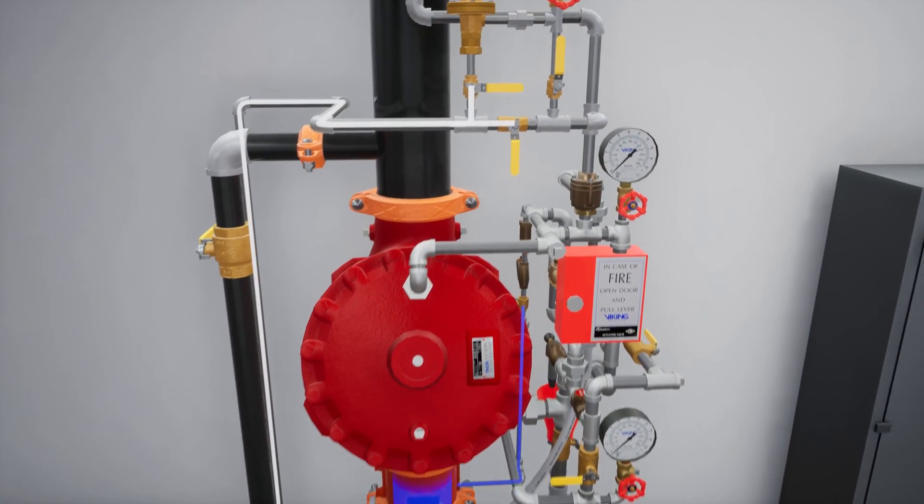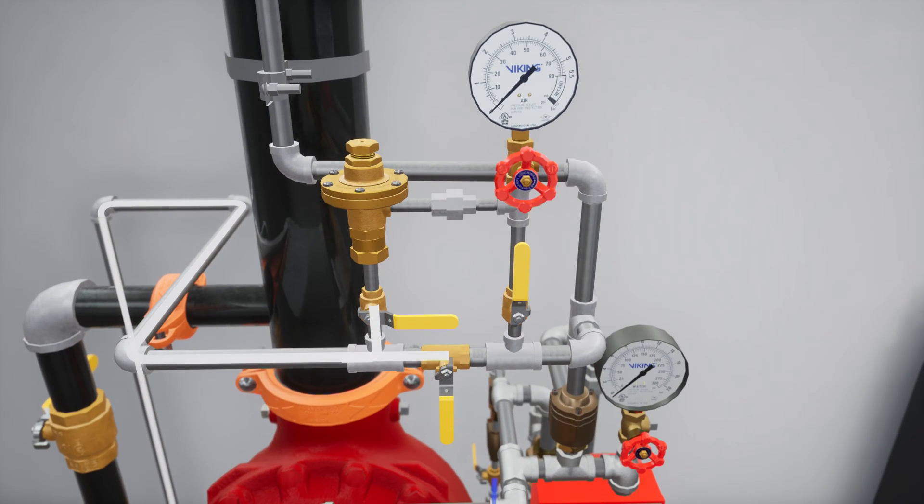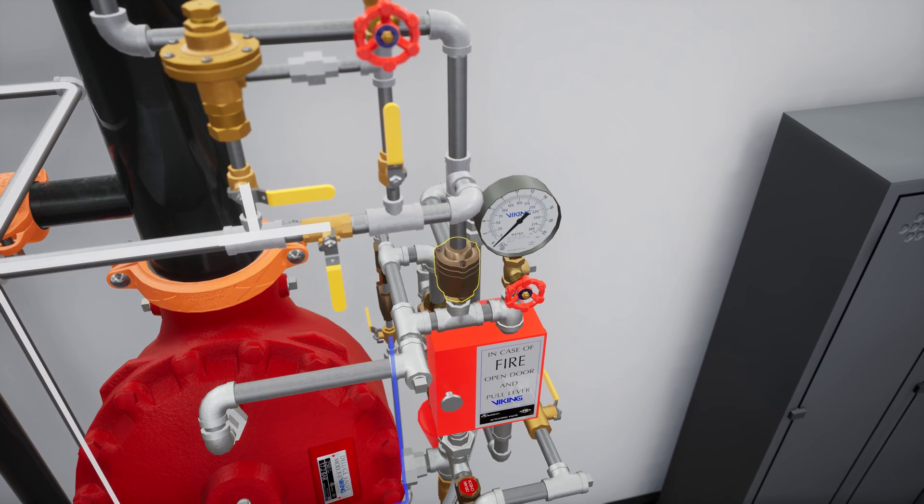To start, let's introduce air into the release line by opening the air bypass valve on the air maintenance device. Included in the release system is a pneumatic actuator, which will be closed by the pressurized air in the dry pilot line.